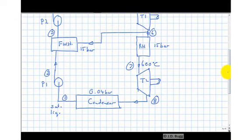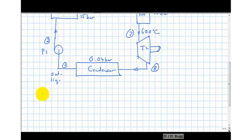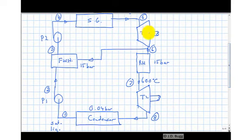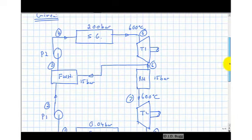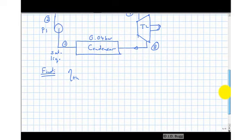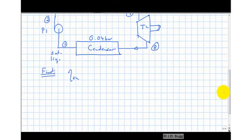We are asked to find the thermal efficiency. Thermal efficiency is the net work divided by the heat added. To get the net work we need the work transfer in both turbines and both pumps. To find the heat added we need the heat added in the steam generator and the reheater, since both receive heat from outside the cycle. Essentially we need to analyze every component for work or heat transfer.